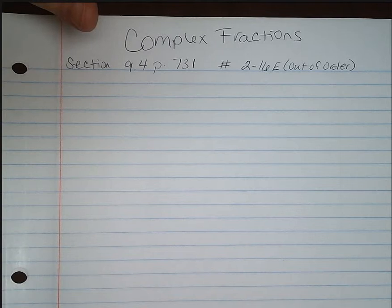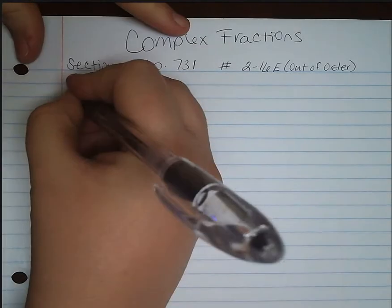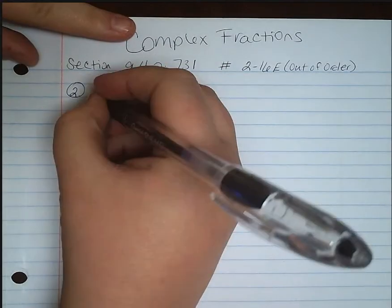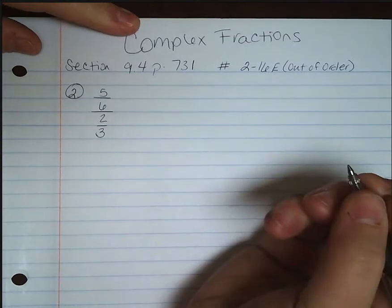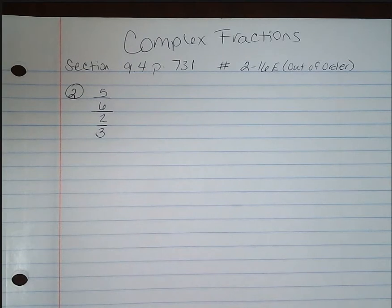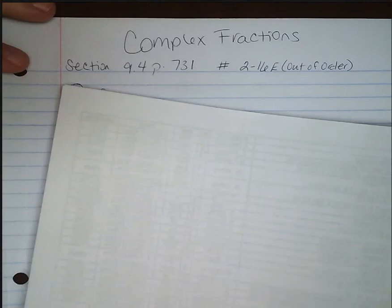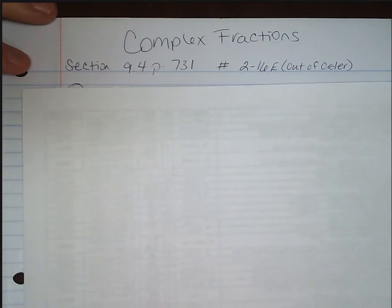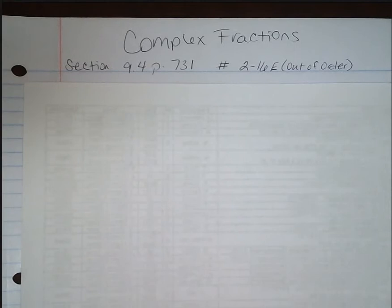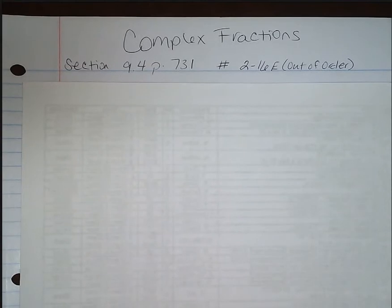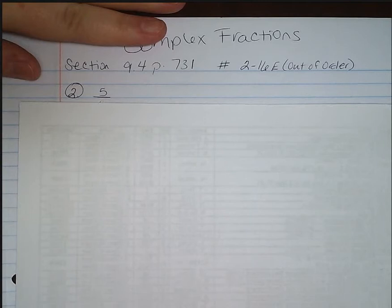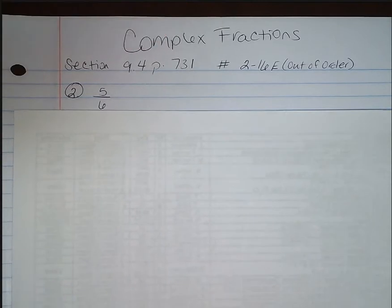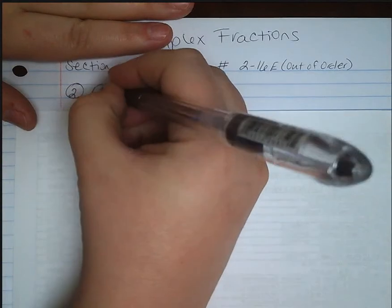It's when you have a fraction within another fraction. So if we look at problem number 2 in your book, we have 5 over 6 divided by 2 over 3. Complex fractions are when you have a fraction within another fraction. I'm going to look and find out what my fractions are. What makes something a fraction is when you have a numerator and a denominator — a number over a number. So there's my first number and there's my second number, and you can see there is a fraction, so I'm going to circle that.